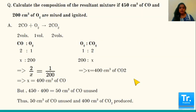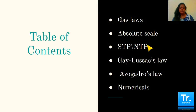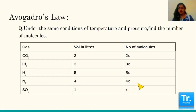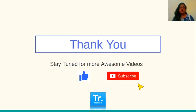To summarize: today I covered gas laws, absolute scale, STP and NTP, Gay-Lussac's law, Avogadro's law, and solved several numericals. I hope you have understood. Please go through the chapter, solve all the numericals, and put any doubts in the comment section. Please hit the like button, share, and subscribe to my channel and hit the bell icon to get notified of upcoming videos.